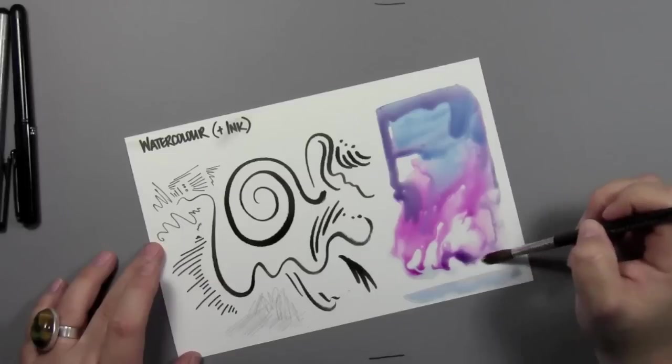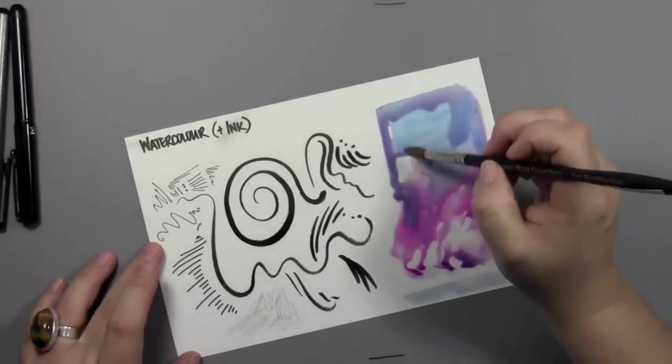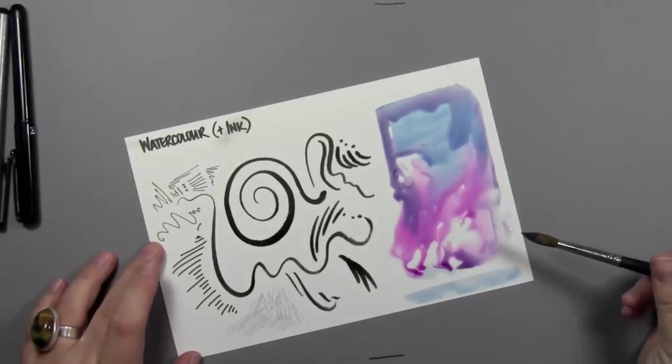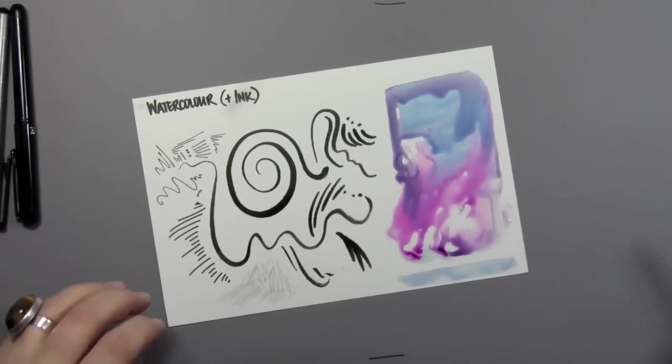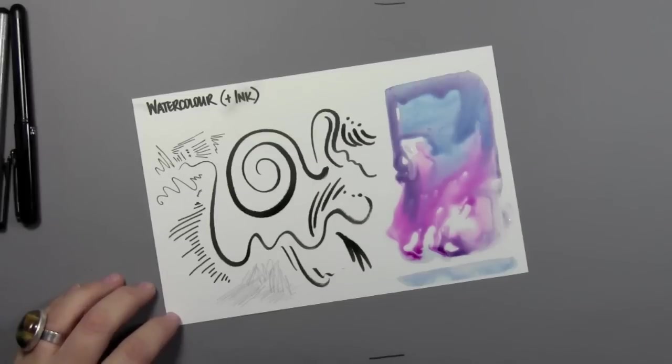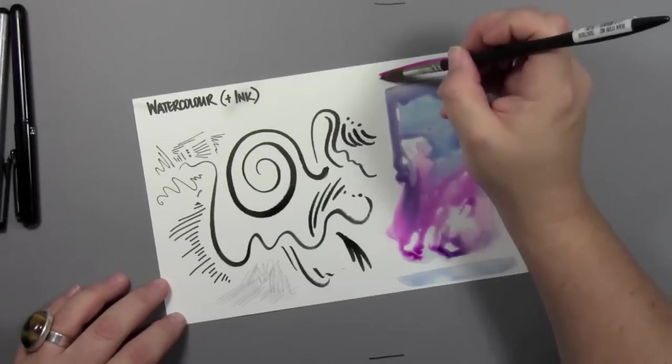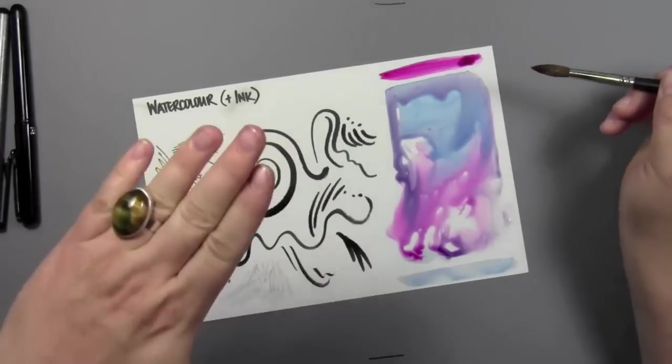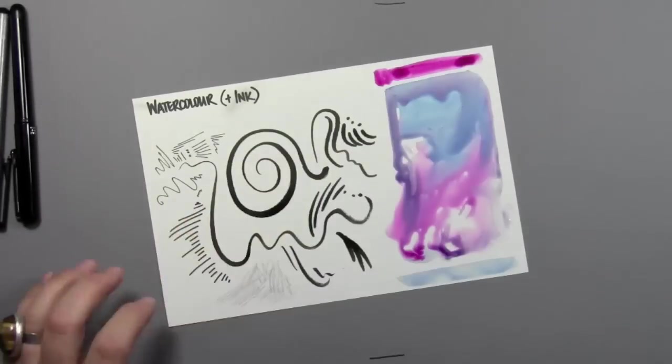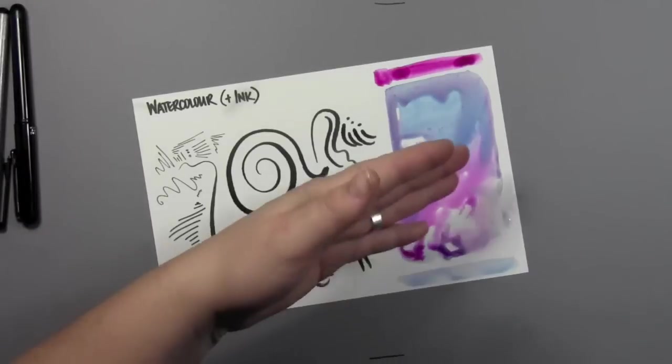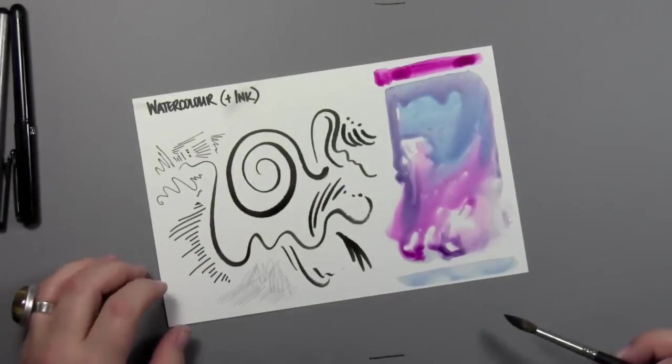Now this kind of works similar to Yupo where it absorbs a little bit. It does absorb more than Yupo does, but it isn't an absorbent surface. It's not very absorbent, that's why the ink is still sitting on top. So the watercolor sits on top and runs around, which gives you these great kind of uncontrolled effects.